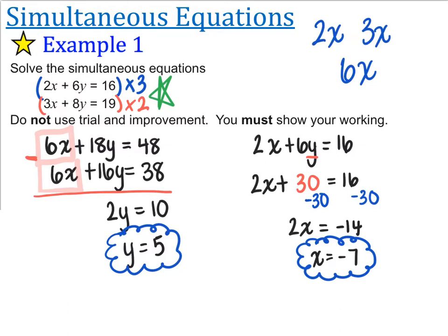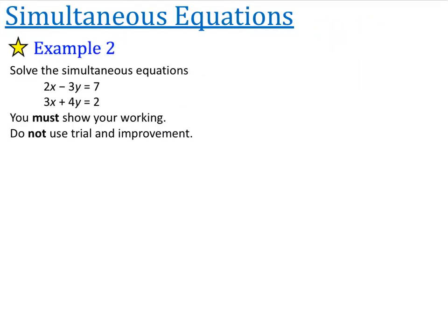Alright, that's been a pretty long explanation. We're only going to try one or two more questions, because it doesn't really get much different. Example two: solve the simultaneous equations 2x minus 3y is equal to 7, and 3x plus 4y is equal to 2. You must show your working out.